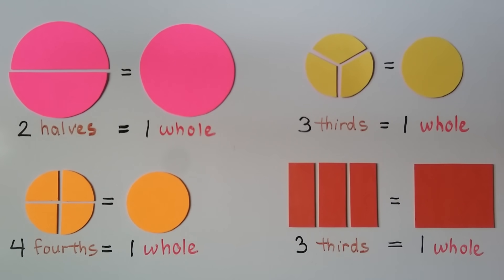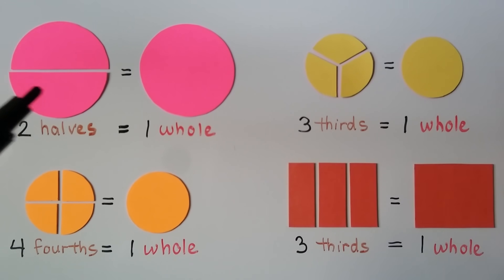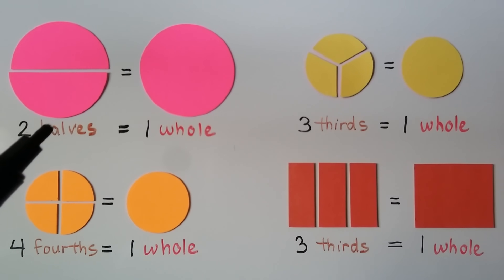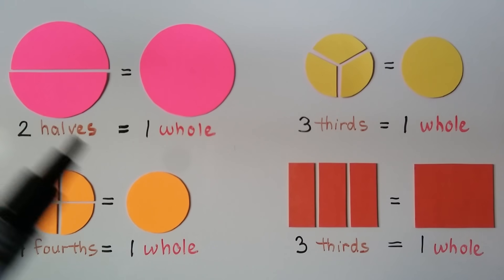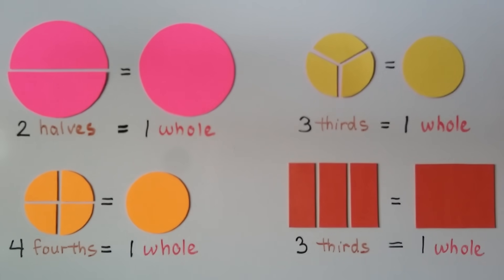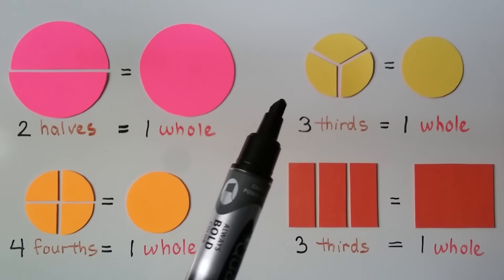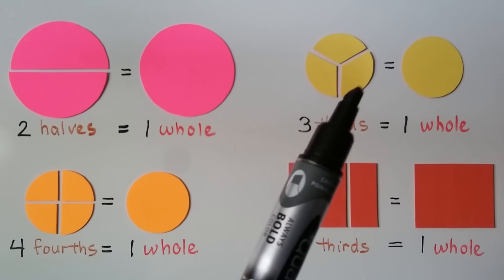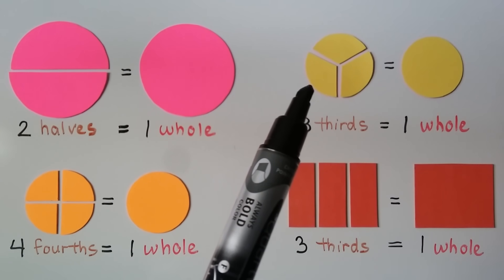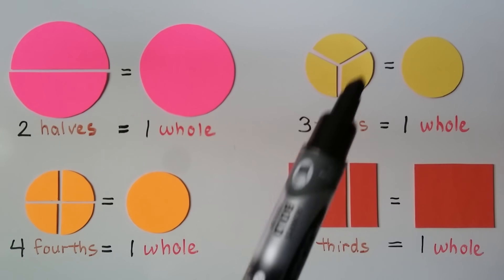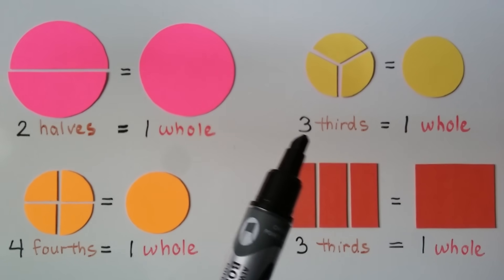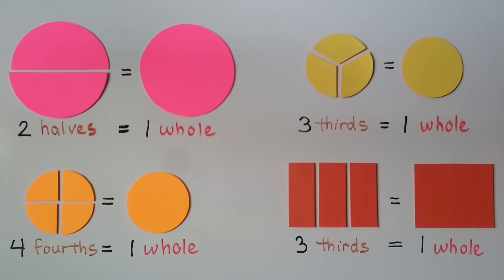And it doesn't have to be a square. Here we've got a circle, and we cut it horizontally this way. We have a half and a half — two halves. These two halves together are equal to one whole pink circle. And this yellow circle was cut into three equal parts: one, two, three equal parts. Each part is one third, so we have three thirds. All three thirds together are equal to one whole yellow circle.